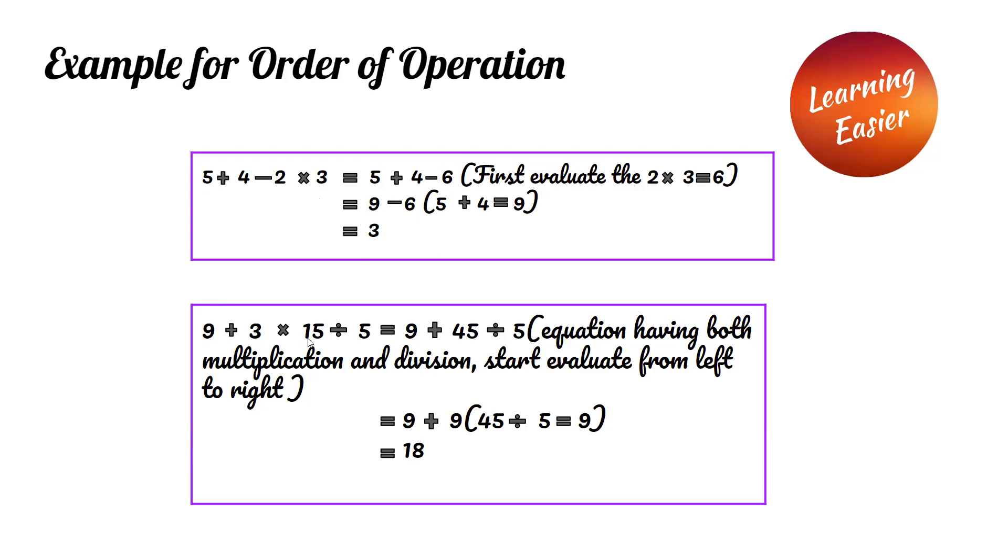9 plus 3 times 15 divided by 5. Since the equation has both multiplication and division, we have to do it from left to right. We do 3 times 15, which is 45. 45 divided by 5 is 9. 9 plus 9 is 18. So 18 is the answer for this problem.